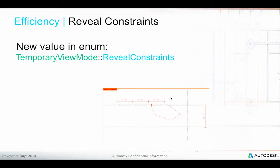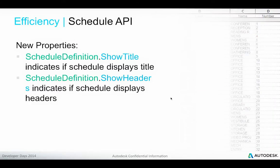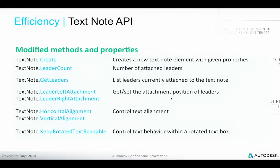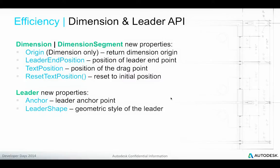There is also new functionality to reveal constraints, some enhancements in the schedule API to control the title and header displays, and a new datum plane base class for levels, grids, and reference planes which provides additional functionality. The text note API has been renovated — another example of more direct API access to built-in Revit elements through an automated API generation system. Whenever we see a static create method on a class instead of the new text note creation method on the creation document, that indicates the API has been completely renovated, which normally also provides better integration and more API access.